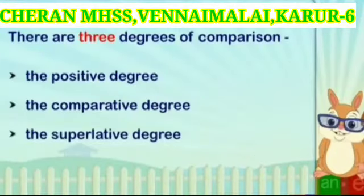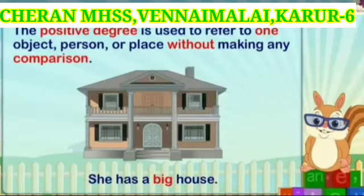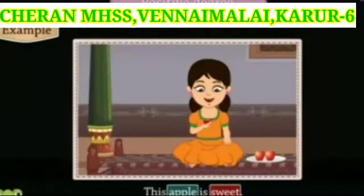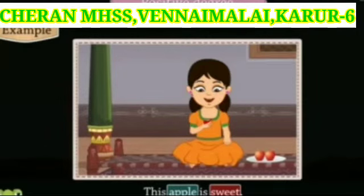There are three degrees of comparison: the positive degree, the comparative degree, and the superlative degree. The positive degree is used to refer to one object, person or place without making any comparison. For example, 'She has a big house.' 'This apple is sweet.' Here, sweet is the positive or the simplest form of the adjective. The adjective sweet is used to describe the noun apple; it is not used for comparison.